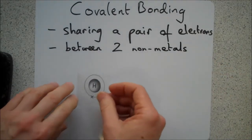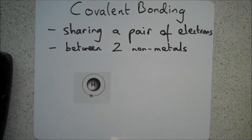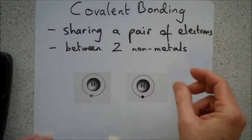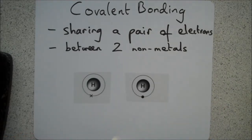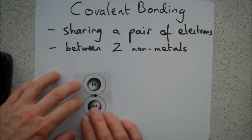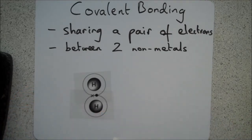First we're going to look at the simplest element of all: hydrogen, element number one, which has one proton and one electron. In its outer shell it has just one electron. The outer shell wants to be full for an atom to be stable, so hydrogen would ideally like two electrons in its outer shell. When two hydrogen atoms are on their own, they bond together by sharing electrons, overlapping their shells so that both hydrogens have two electrons in their outer shell.